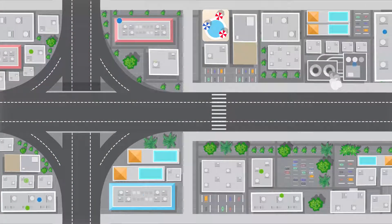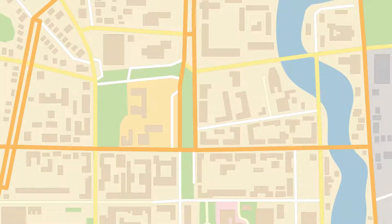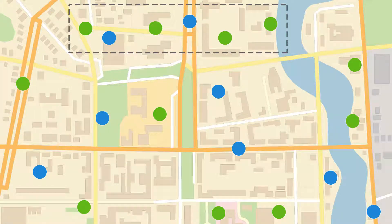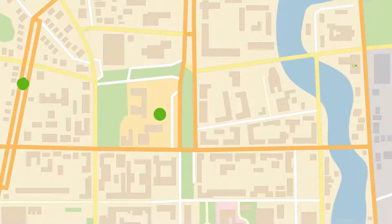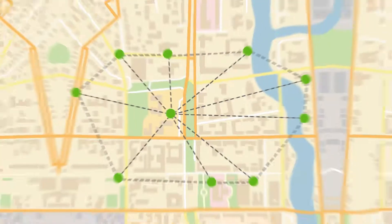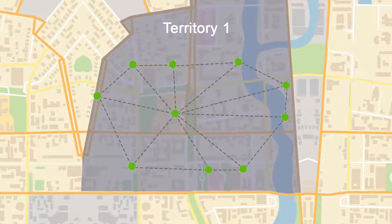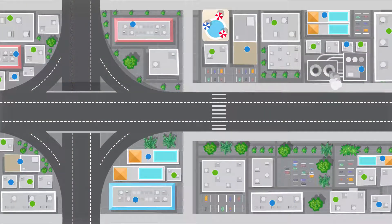With dozens of sales reps assigned to thousands of customers based on postal codes, your territory managers can spend enormous amounts of time with realignments and not really know the impact each time. Can reps still finish all their work? How many customers are in each territory? What's the transit time to visit each one? What are the new territory statistics like total sales volume or average customer rating? Are there gaps or overlaps in coverage?